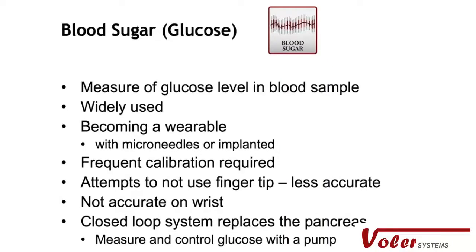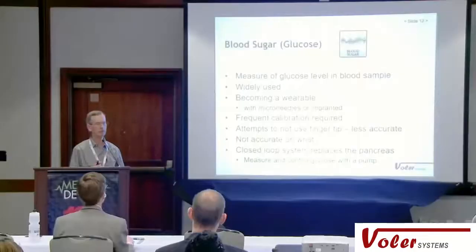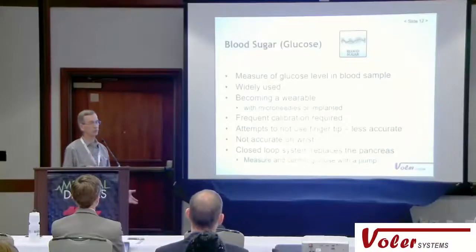Glucose measurement is another very common one. Today we have wearable patch devices with microneedles — they don't feel like needles, just go through the skin enough to pick up a glucose signal. They do require calibration; you have to prick your finger once or twice a day because they're not accurate over a long period. Also, you need a very good blood perfusion where you're measuring glucose, and the wrist is not a good place. Interestingly, the most common place people like to wear a device — the wrist — is probably the worst place to put it. Today we have sensors and pumps that control glucose with insulin, meaning you can have a wearable pancreas for people with type 1 diabetes.